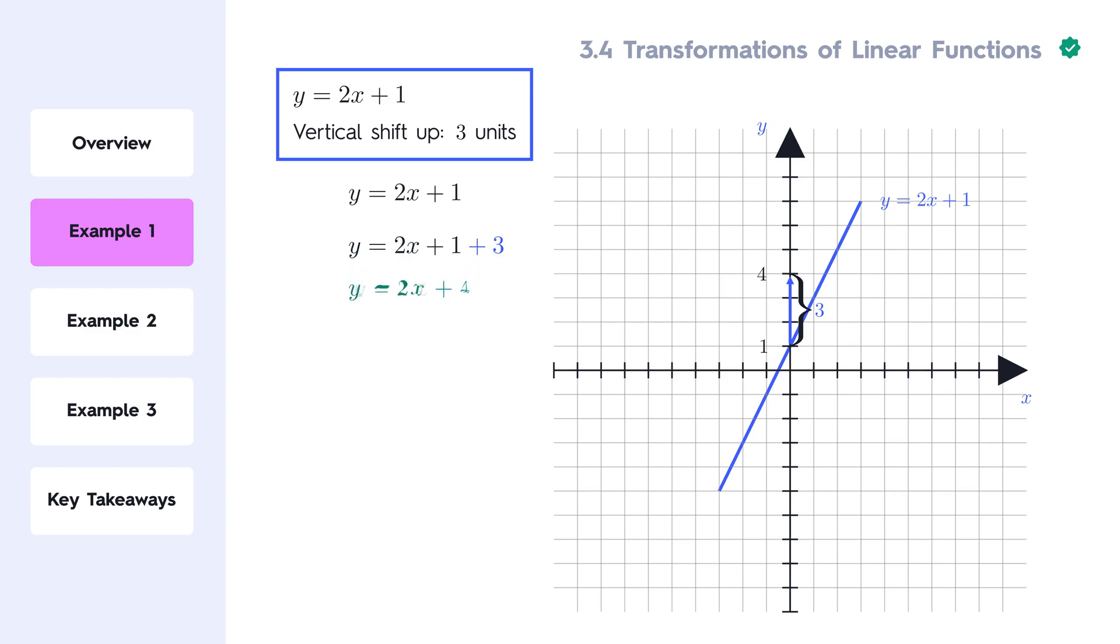After adding 3 to the constant, we simplify the function to y equals 2x plus 4. So, the new equation after applying a vertical shift of 3 units upwards is y equals 2x plus 4.